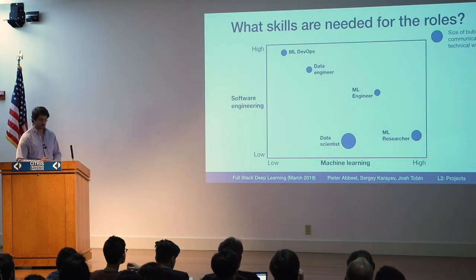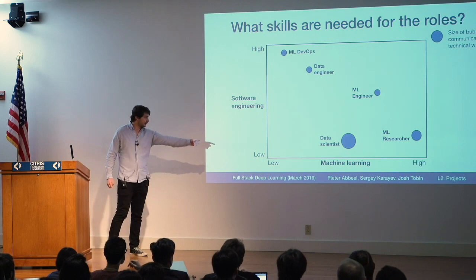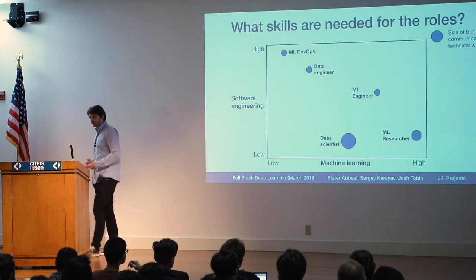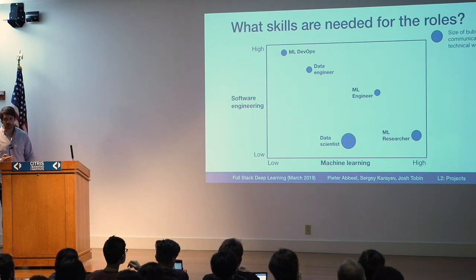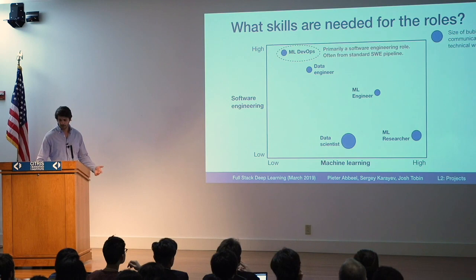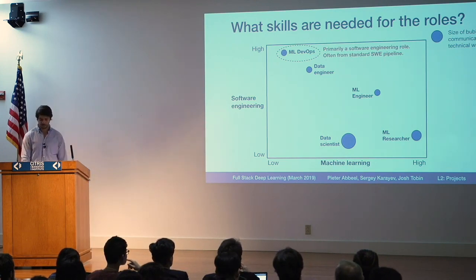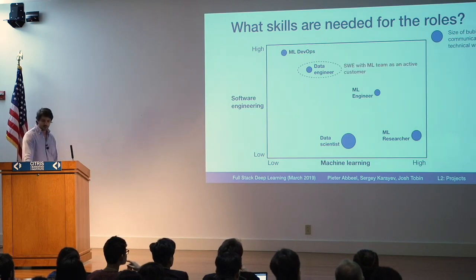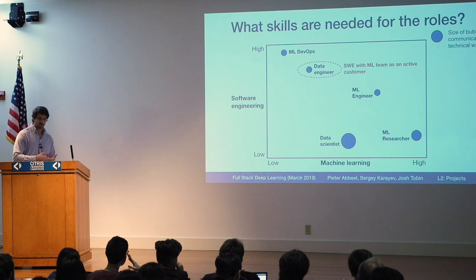So what skills do you need to actually do each of these jobs? On this chart the left axis is level of software engineering skill, and the bottom axis is level of machine learning knowledge. Each of the roles is plotted on this two-by-two, and the size of the bubble corresponds to how much communication and technical writing acumen you need to be successful in that role. ML DevOps is basically a software engineering role — often these people come from a standard software engineering pipeline and are placed on a machine learning team. Data engineers are most commonly software engineers with the machine learning team as their customer, but are sometimes embedded in the machine learning team.